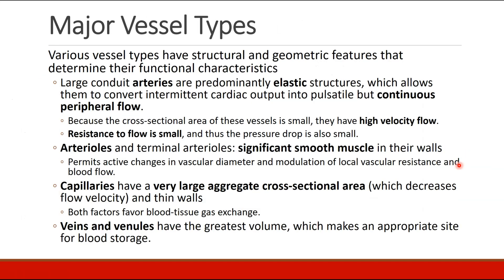Now we are going to start discussing the different kinds of blood vessels that carry the intravascular volume. Arteries are large conduit vessels — very elastic — and they allow the intermittent, pulsatile cardiac output to be converted into continuous peripheral blood flow. The cross-sectional area of these vessels is relatively small, even though they're large conduit arteries, and there aren't very many of them. Flow tends to be relatively high velocity, with not much resistance and a small pressure drop as fluid moves distally.